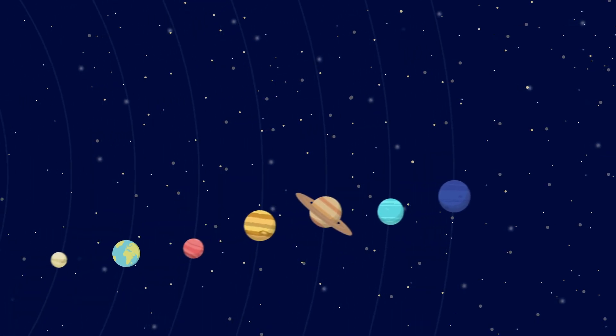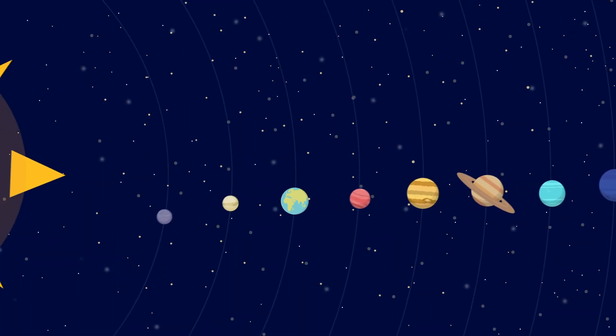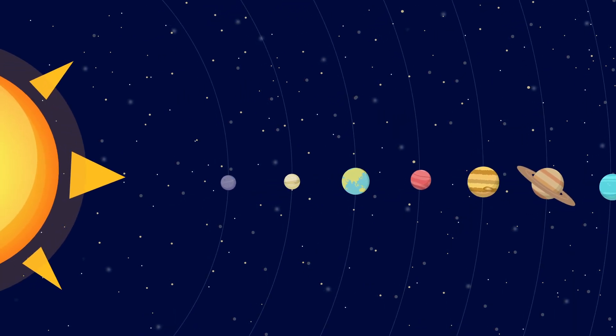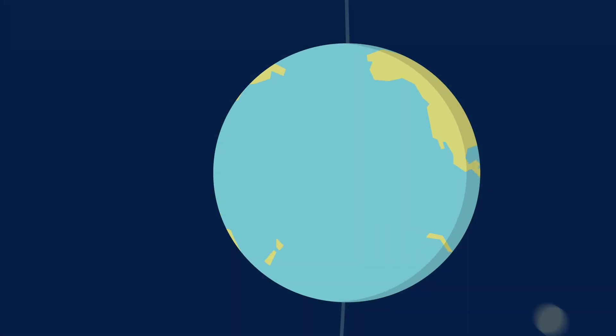We live in a dark and infinite universe. Of all the planets in our solar system, which occupies only a small part of the universe, most are unable to sustain life. The planets that can sustain life are located in the habitable zone. We'll return to this idea later.